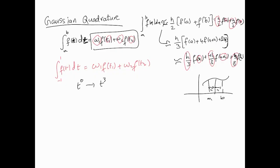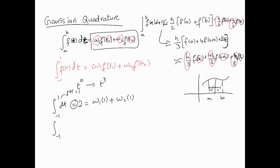For f(t) = 1 (i.e., t⁰): the integral from -1 to 1 of 1 dt equals 2. This should equal w1·f(t1) + w2·f(t2) = w1·1 + w2·1. So equation one is: w1 + w2 = 2. Think of these test cases as a training set — similar to neural nets — for finding w1, w2, t1, t2.